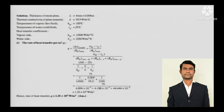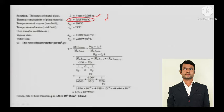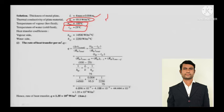In the solution: the thickness of the metallic plate is L = 4 mm, converted to meters. The thermal conductivity of the plate material k is given. The temperature of the hot fluid (vapor) is 100°C. The temperature of the cold fluid (water) is 25°C. The heat transfer coefficient on the vapor side is 14,500 W/m²·°C — a high value because it is hot.